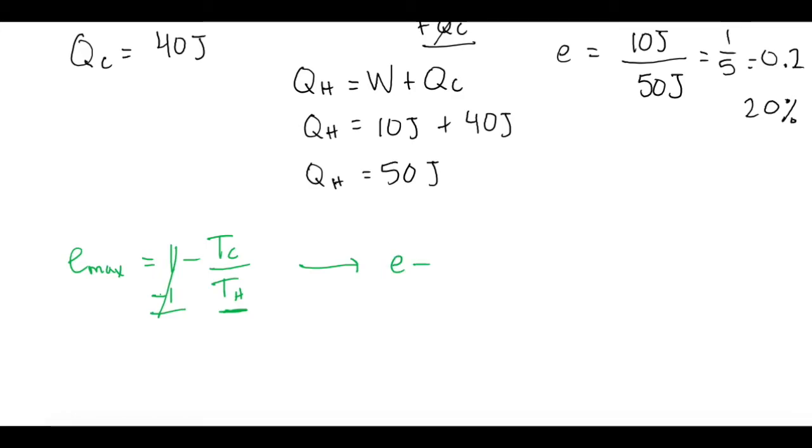So E minus 1 is equal to negative TC over TH, and now we are going to times both sides by TH. So that gives us TH times E minus 1 gives us a negative TC.